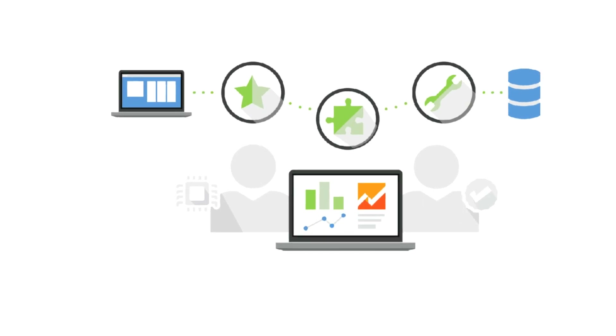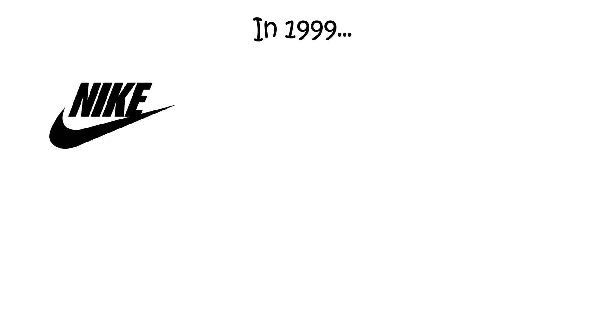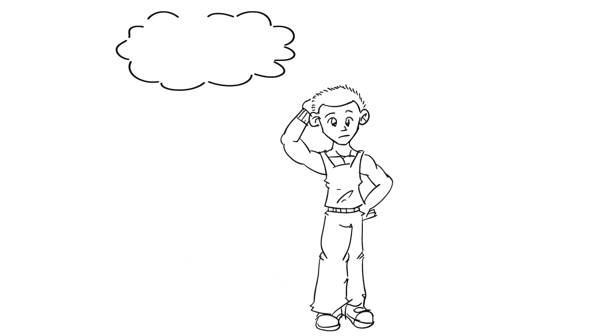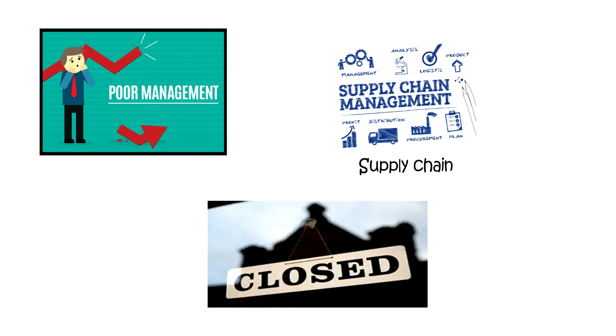Hello everyone, welcome to the Analytics Mastery Club. In 1999, the stock price of Nike dropped by 20% and Nike suffered a sales loss of 100 million dollars. The reason for this loss was due to poor management of the supply chain. Proper management of a company can make or break a company.